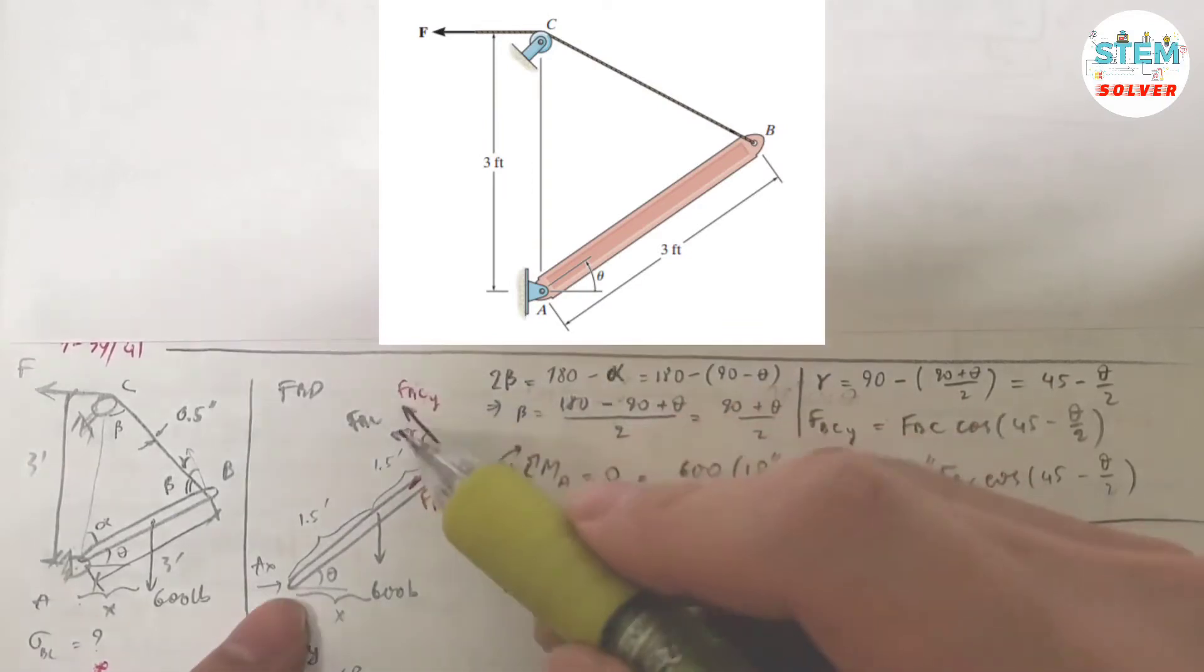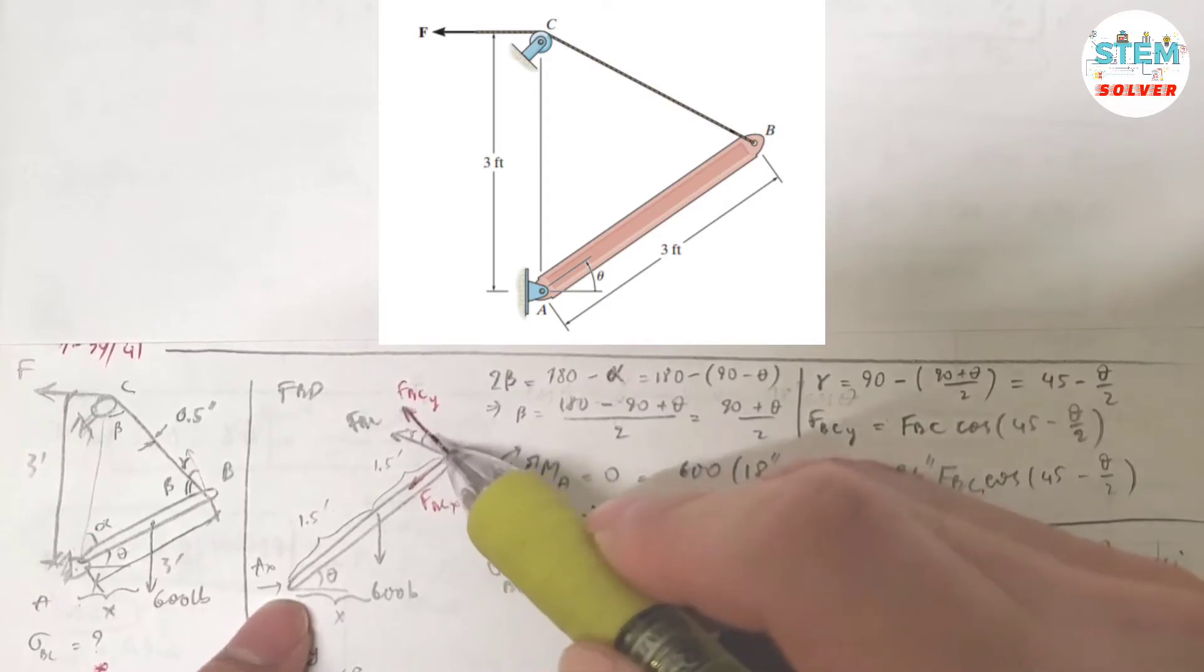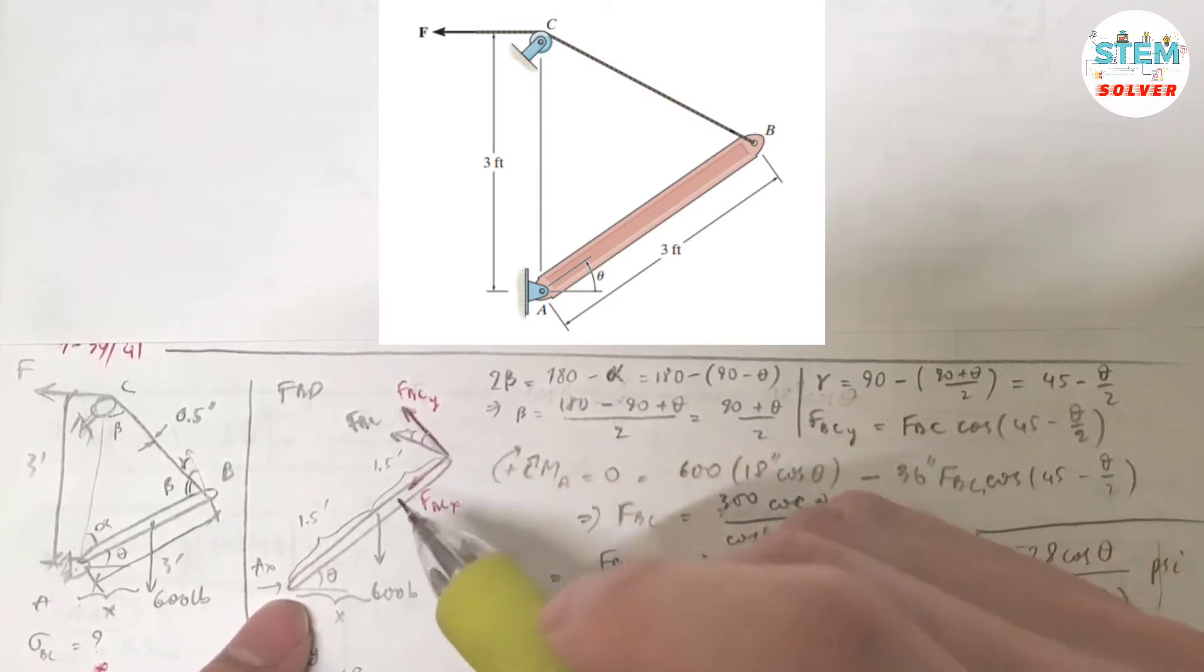And then you can find FBC by using the ratio or the angle. So that's two things you need to do here.